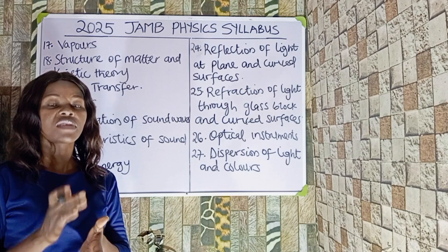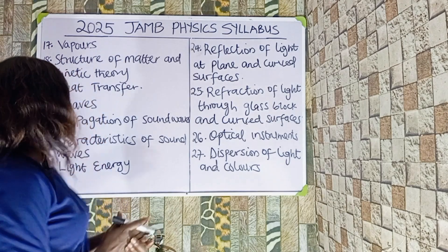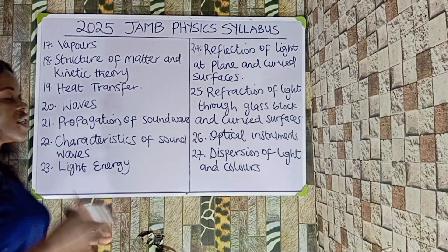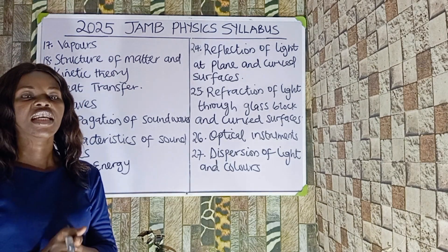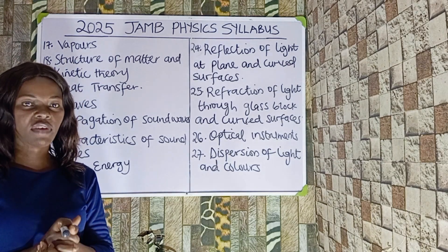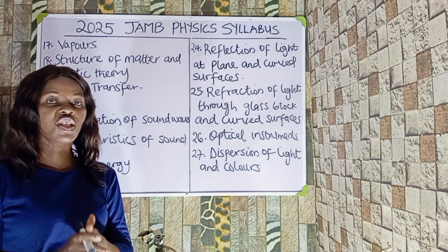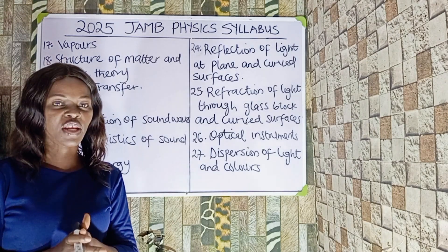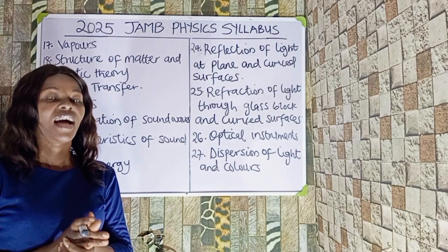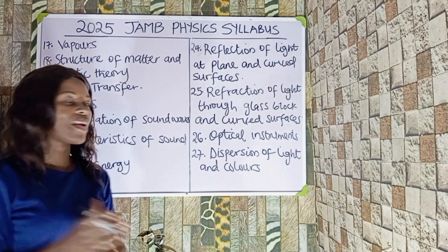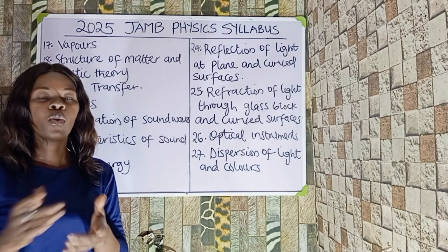Number nineteen is heat transfer. You should know that heat can be transferred through three mechanisms: by conduction, by convection, and by radiation. You should go through that topic and review the questions associated with it.